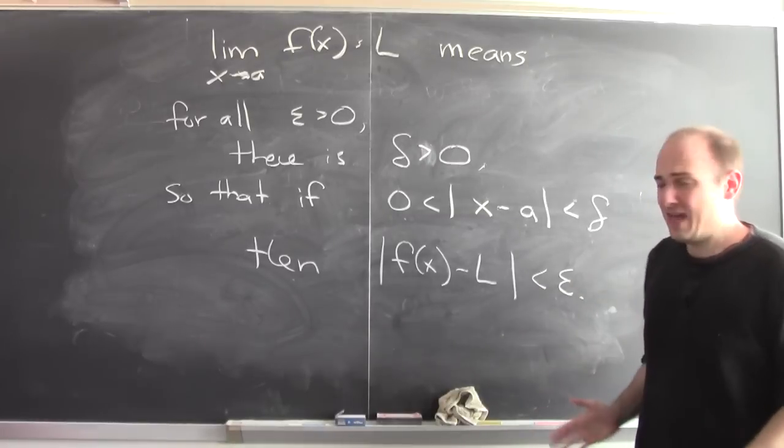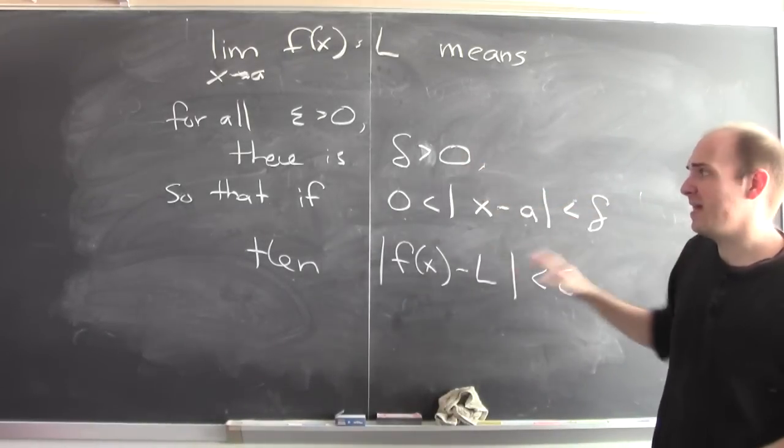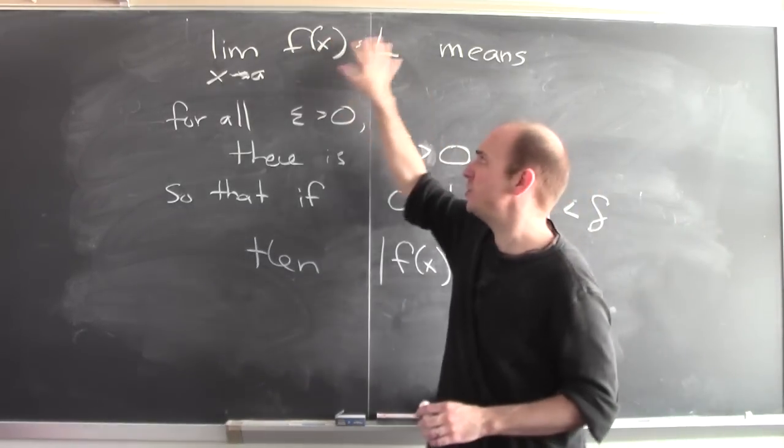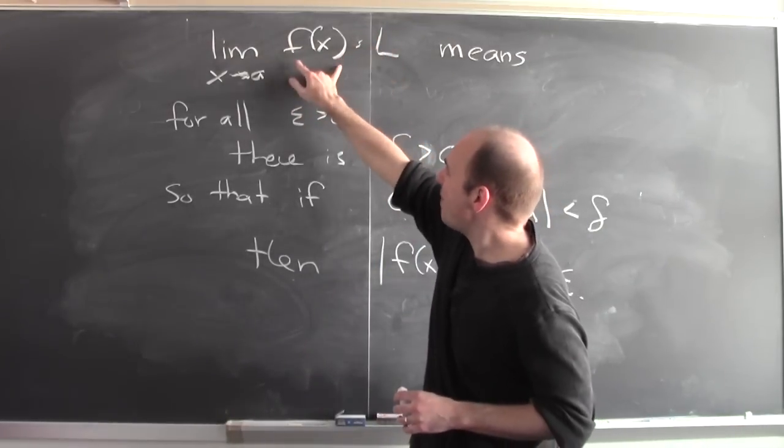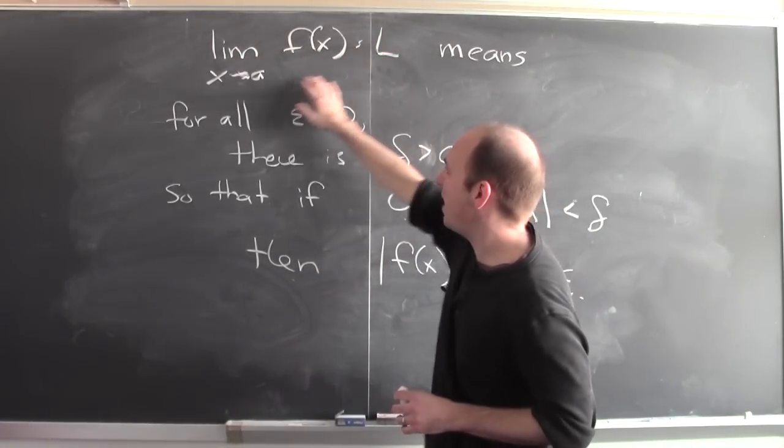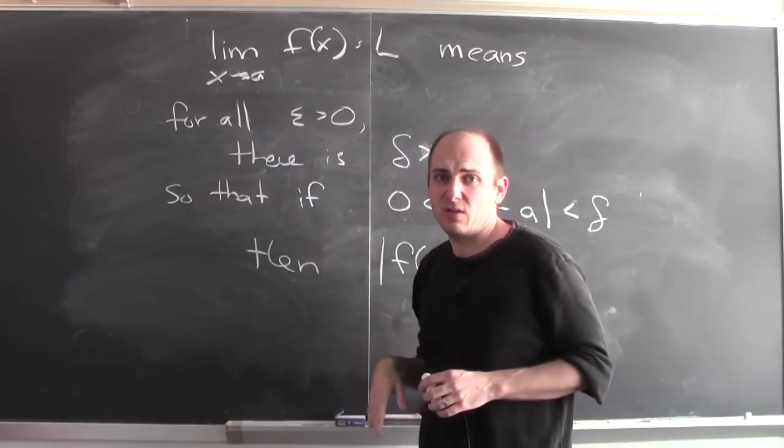When you say it like that, I think it's really hard to see how this has any relationship to what a more intuitive description of this limit statement might be. What's this trying to get at? It's trying to say f of x is as close as I want to L by making x sufficiently close to a.